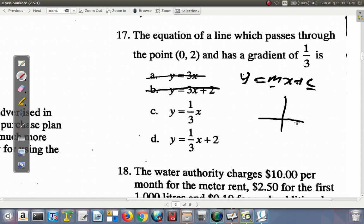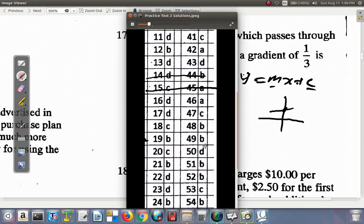It intersects at (0, 2). That means if you have the X and Y-axis, 0 is the X value, 2 is the Y value, so it intersects at 2. So it's definitely D. I think a while ago we looked at the fact that 17 was D, right? 17 is D. 18 is C. Let's look at it.